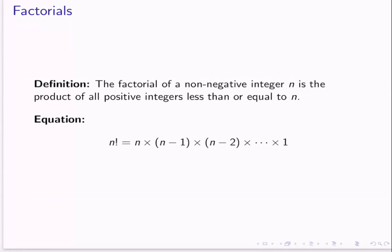The equation for that is: n factorial is equal to n times n minus 1 times n minus 2, all the way down until we get to 1. So it's n itself multiplied by the number 1 less than n, then the number 2 less than n, then the number 3 less than n, and so on, until eventually we reach 1.